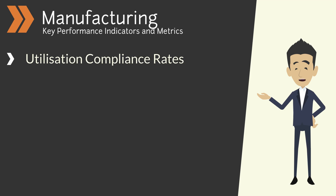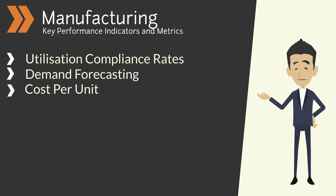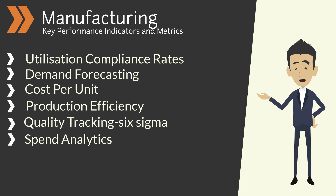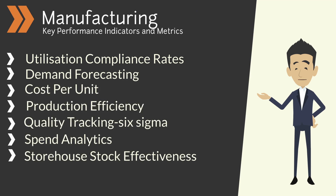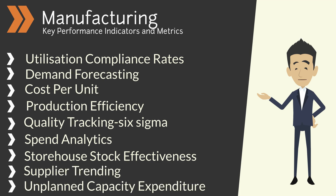Manufacturing KPIs and metrics include utilization, compliance rates, demand forecasting, cost per unit, production efficiency, quality tracking, Six Sigma, spend analytics, storehouse stock effectiveness, supplier trending, and unplanned capacity expenditure.